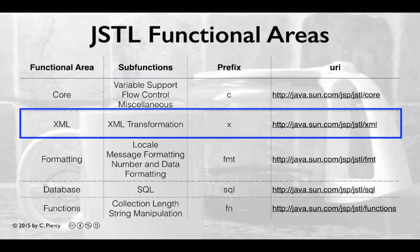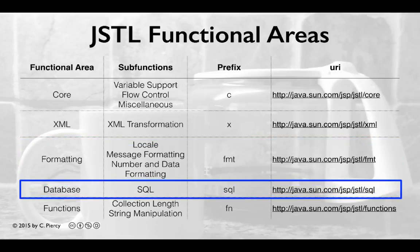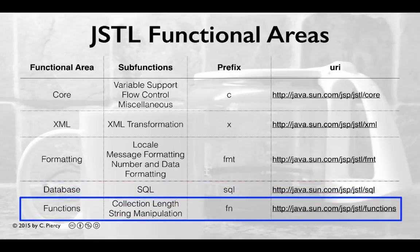The XML section provides tags for working with and manipulating XML documents. Its prefix is X. The formatting section provides tags for formatting text and numbers and internationalization; the prefix to use there is FMT. The database section provides tags for working with SQL queries and data sources; the prefix for this part of the library is SQL. And finally, the functions area of the JSTL provides functions that can be used to work with collections and manipulate strings. Its prefix is FN.